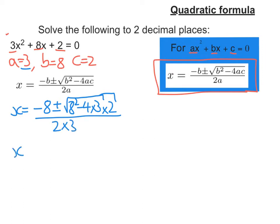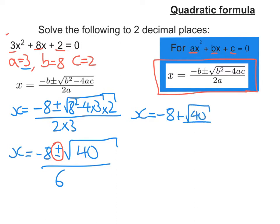Now I would do all the multiplying and the powers, so we're going to get minus 8 plus or minus the square root of 40 all over 6. Now, this plus or minus means we're going to get two roots, one where we're going to have a plus and one where we're going to have a minus. So if I write those out separately, you're going to get x is equal to minus 8 plus the square root of 40 over 6, or minus 8 minus the square root of 40 over 6.